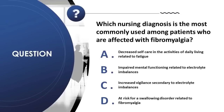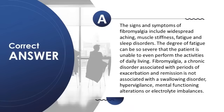Question 8: Which nursing diagnosis is most commonly used among patients with fibromyalgia? A) decreased self-care in ADLs related to fatigue; B) impaired mental functioning related to electrolyte imbalances; C) increased vigilance secondary to electrolyte imbalances; D) at risk for swallowing disorder related to fibromyalgia. Correct answer is A. Fibromyalgia includes widespread aching, muscle stiffness, fatigue, and sleep disorders; fatigue can be so severe the patient cannot perform ADLs. Fibromyalgia is not associated with swallowing disorders, hypervigilance, mental functioning alterations, or electrolyte imbalances.